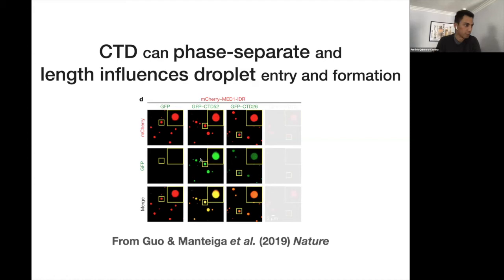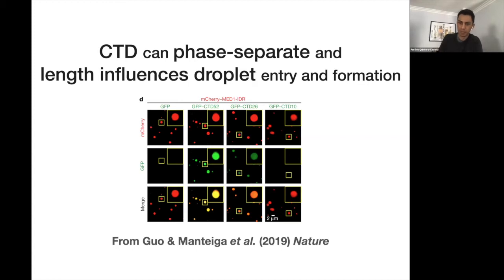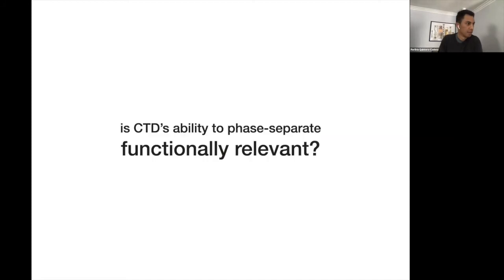This enrichment in droplets is dependent on CTD length. With 26 repeats — the yeast CTD length — they are still enriched, though not as much as with 52. At 10 repeats, you get almost no visible enrichment. This is particularly intriguing because it resembles the transition from 12 to 10 CTD repeats where you see a very dramatic impact on growth rate.